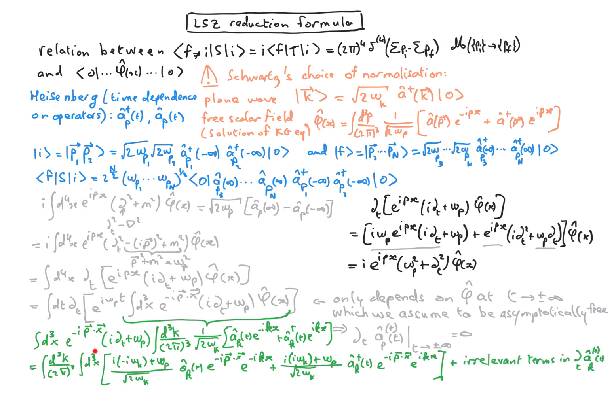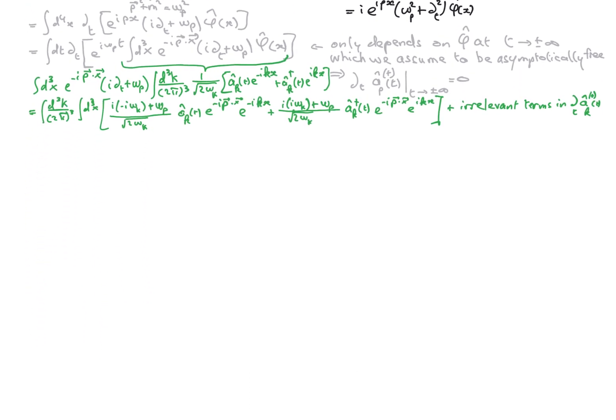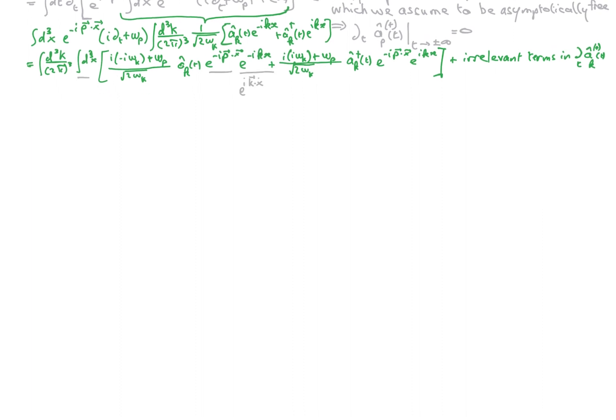The integral over the spatial component of x is going to give us a delta function between the Euclidean vector p and k. And similarly for the second term, we see that both delta functions are going to enforce that omega k and omega p are equal. And therefore this term is going to be zero because we have in the numerator minus omega k plus omega p, which is zero when they are equal.